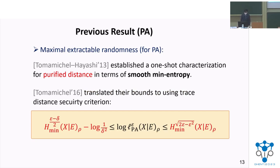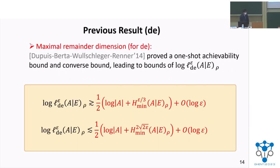For the previous result of privacy amplification, Thomas, Mitchell, and Ayachi established a one-shot characterization for purified distance in terms of smooth min-entropy. Moreover, in Thomas Mitchell's study, he translated their bounds to using trace distance as the security criterion, which we are mainly concerned with. As for the previous result of quantum decoupling, Dupuis et al. proved the one-shot achievability bound and the converse bound, which can lead to the bounds of the maximal remainder dimensions.